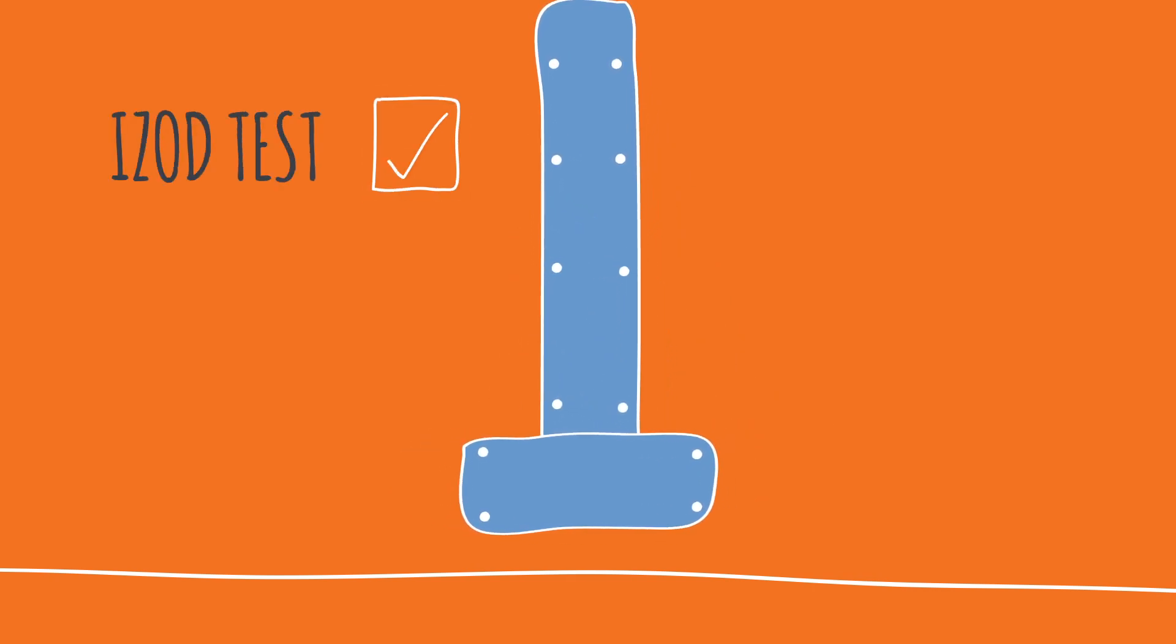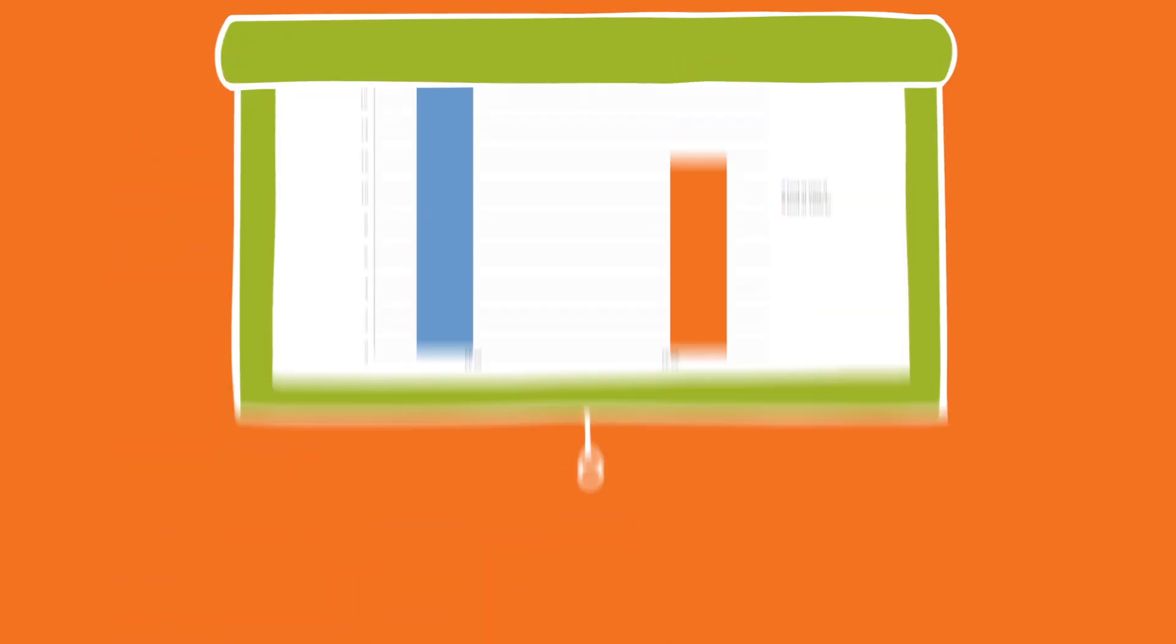An IZOD was performed on notched samples in accordance to the ASTM D-256. For the material to pass, its value had to be greater than 50% of the initial value of the impact. You can see the material after 1000 hours retained 63% of its original impact strength and easily passed the test.